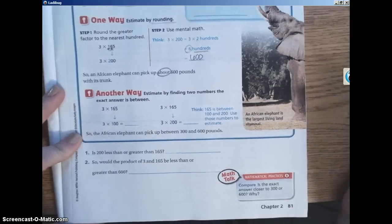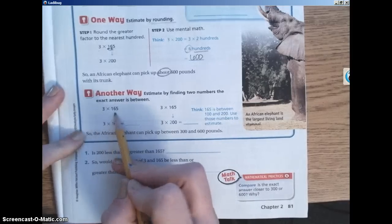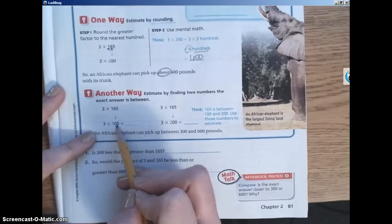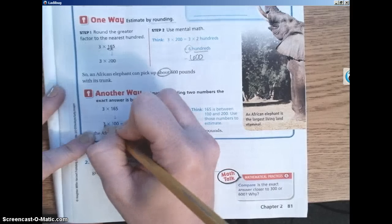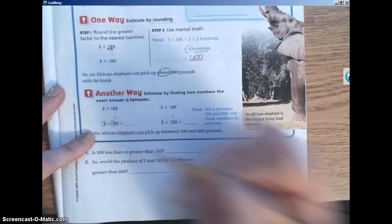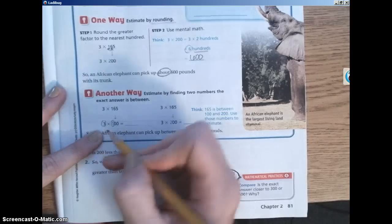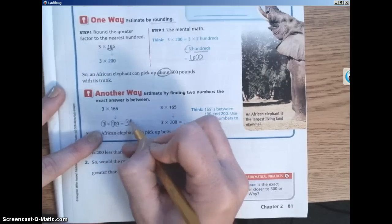Estimate by finding two numbers the exact answer is in between. So here we're taking three times 165. They're actually rounding it down to 100. Three times 100 is equal to, so my class we talked about circling the numbers that are greater than zero. So three times one is three. And then adding however many zeros you have. So add your zeros here.